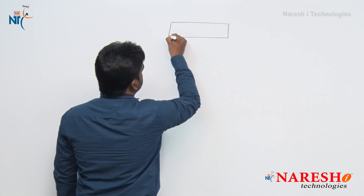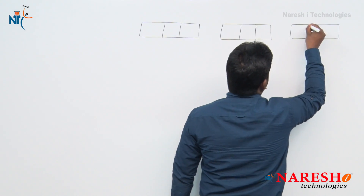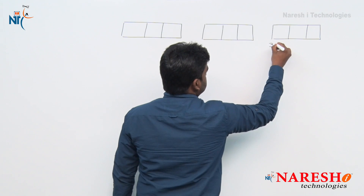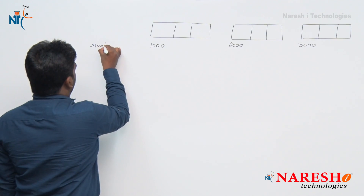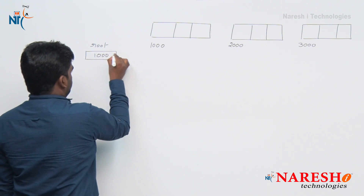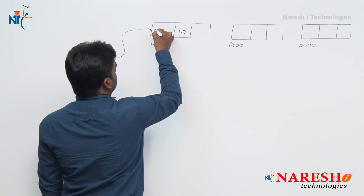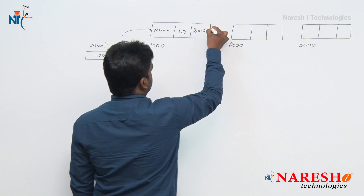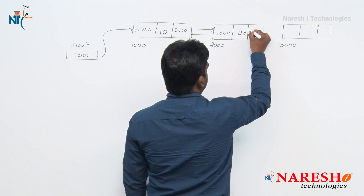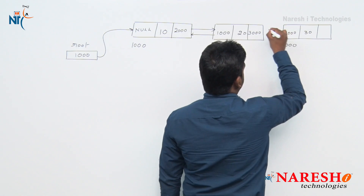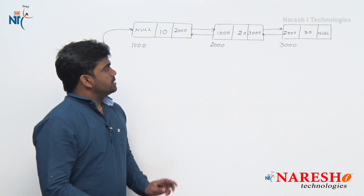Suppose we have some nodes: this is the first node, this is the second node, this is the third node — the list already has some nodes. The address of this node is 3000, this node's address is 2000, and this node's address is 1000. The root variable always points to the first node. The first node's data is 10, its left link is null, and its right link points to the next node at 2000. The previous node address stored is 1000, data is 20, next node address is 3000, previous node address is 2000, data is 30. The last node's right link is null. This is the structure of a double linked list.